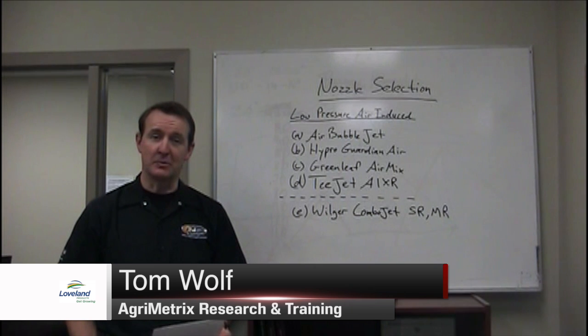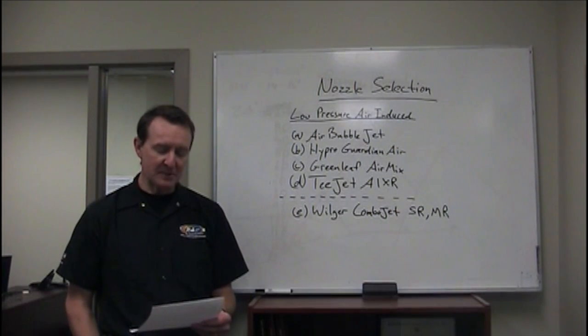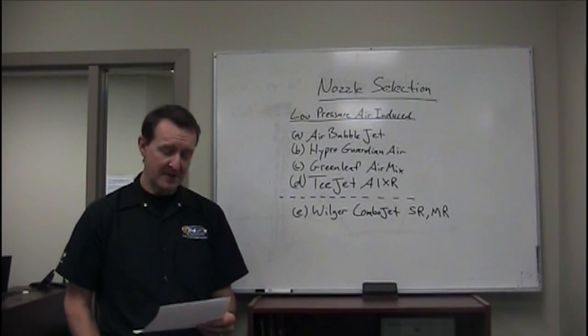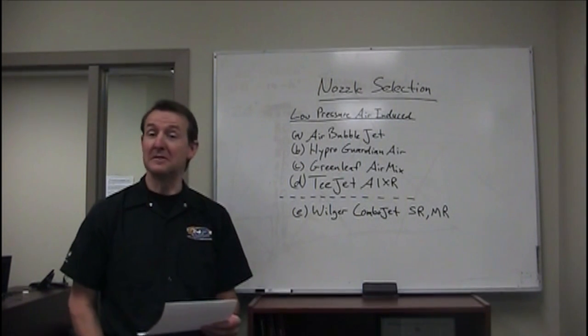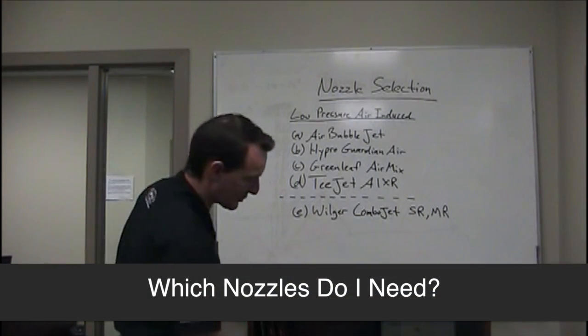My name is Tom Wolf and this is Spray Tips with Tom for this week. We're going to start off with a question and take the whole episode to answer it because it's a very good one. The question was emailed to us: I have three spots for different nozzles on my new sprayer. I want burn-off, in-crop and fungicide. What three should I have, five to fifteen gallons per acre? That's a very common question and a very good one.